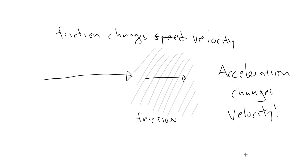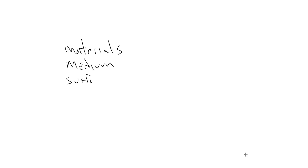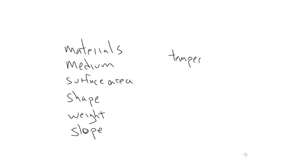Now, of course, in reality, friction can be very complex and depend on a large number of factors: the materials of the two surfaces, or the materials of the object and the medium it's moving through, the surface area, the shape, the weight, the slope of the surface, the temperature, turbulence in the medium, etc. So for our purposes, we're going to simplify all that down into a single vector whose direction is exactly opposite the velocity of the object it's acting on.